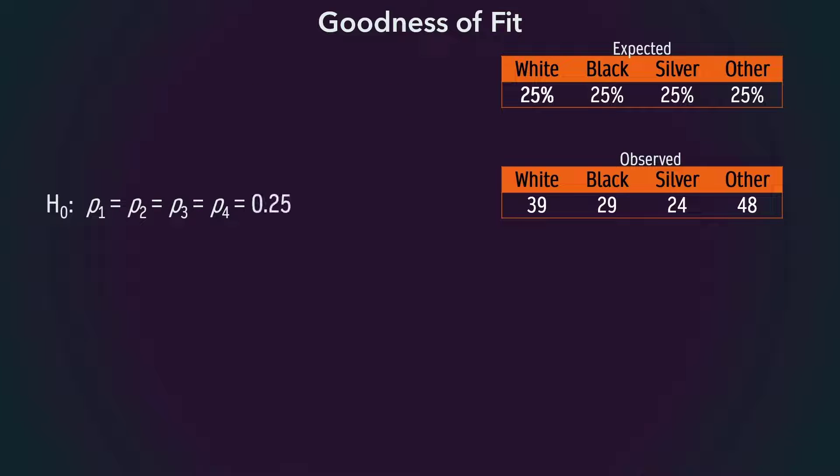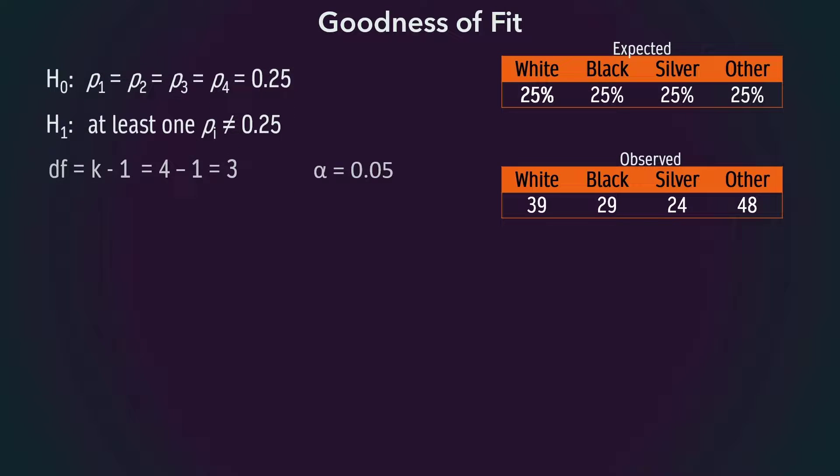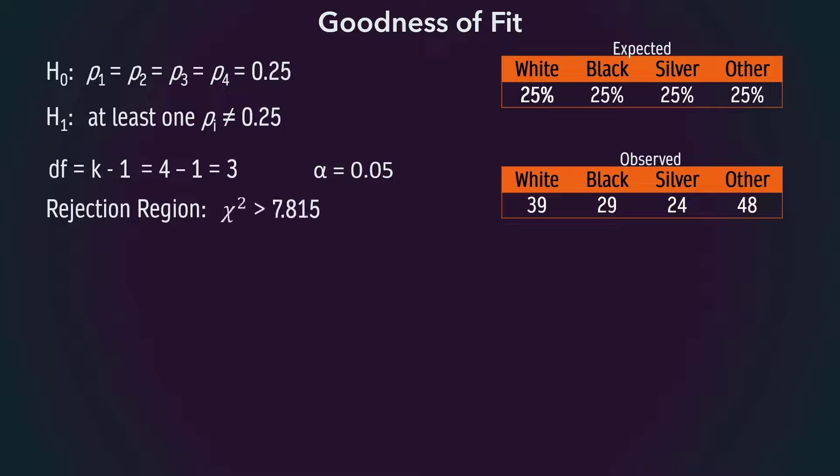The null hypothesis will thus be that all the proportions are equal to 0.25. For the alternative hypothesis, we can still state that at least one of the proportions is not as specified in the null hypothesis, or we can simply say that at least one of the proportions is not equal to 0.25. The degrees of freedom are still 3, and the rejection region is the same.